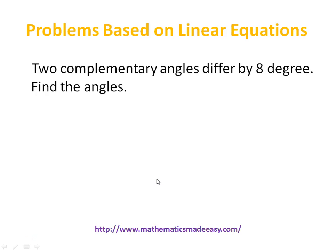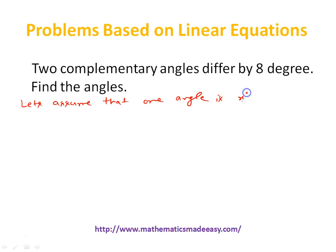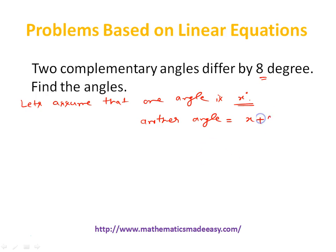Let's assume that one angle is x degrees. So what would be the other angle? In the question it is given that two complementary angles differ by 8 degrees. So if one is x, then the other one would be x plus 8 degrees — then only the difference would be 8.